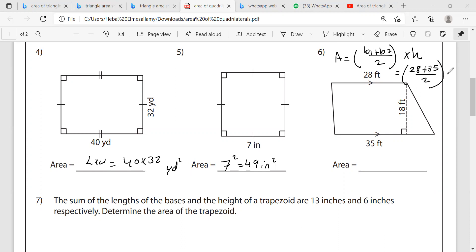So this means 28 plus 35 divided by two. I will work this part first and then I will multiply what I got by 18. 28 plus 35, which is 63 over two times 18, which is 63 times nine. Use your calculator and get the final answer.